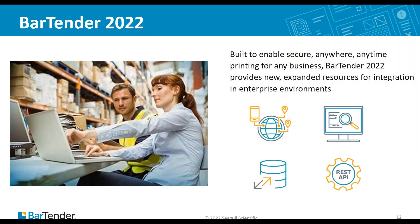This year was an even busier year with major new product announcements. We started the year with our latest Bartender software release, Bartender 2022. Bartender 2022 made it even easier to print from anywhere with remote web printing in our improved print portal application and from the factory floor with our new print station application. We added to our extensive list of database connectors with support for SAP HANA databases. And finally, we further extended our integration platform with a new REST API that gives customers access to all the Bartender integration builder actions via a standard web-based API. We're the only major labeling solution provider with full REST API support.